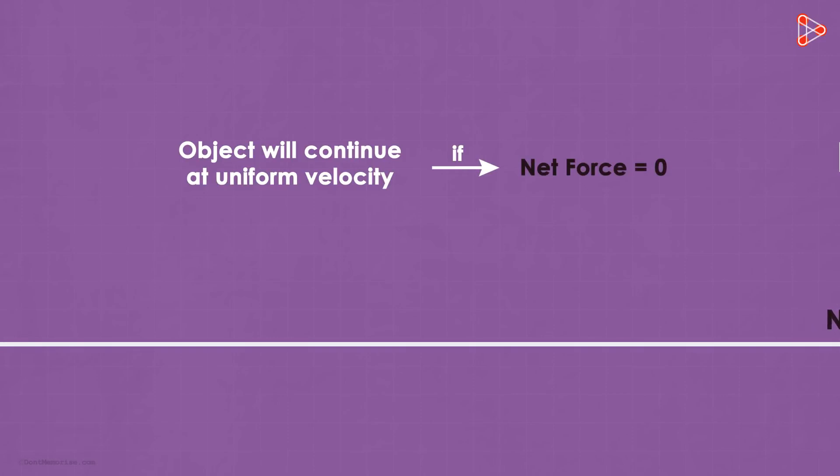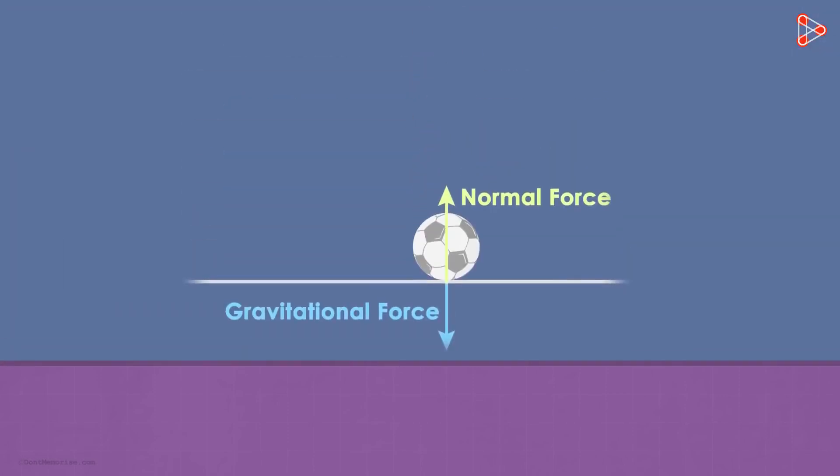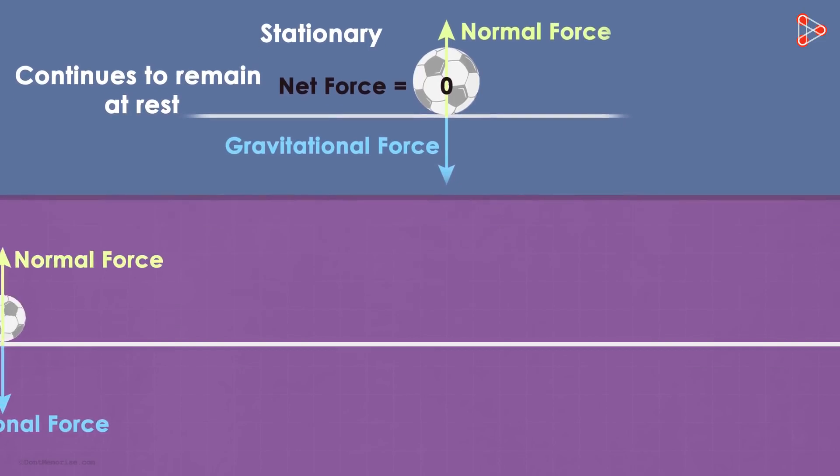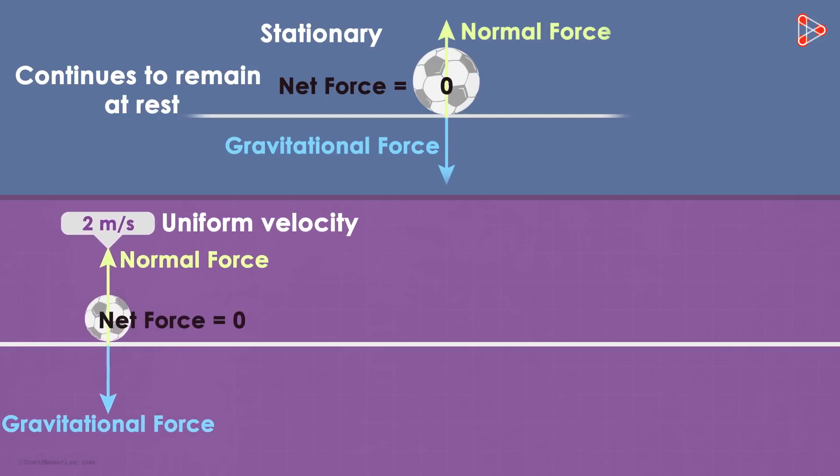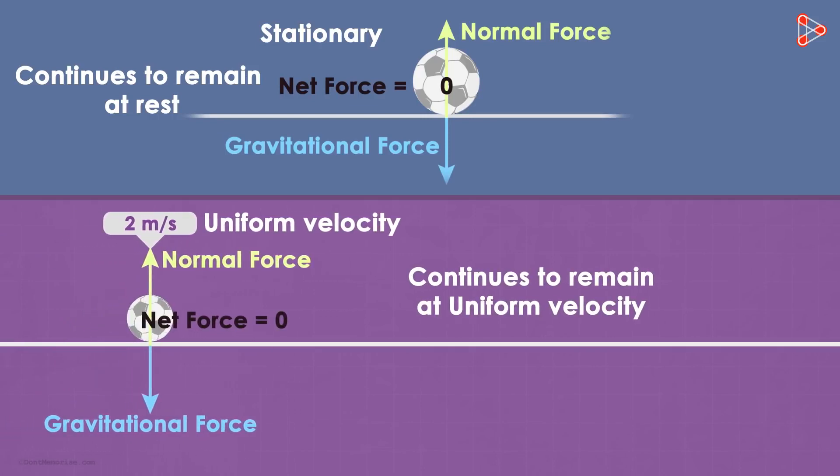So there are two things we've learnt here. First, if the object is stationary and the net force acting on it is zero, then it will continue to remain at rest. Second, if the object is moving at uniform velocity and the net force acting on it is zero, then it will continue to move at that same uniform velocity.